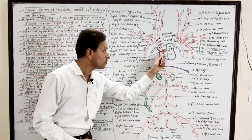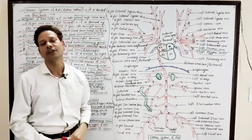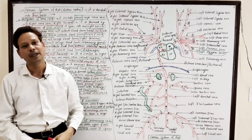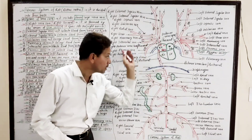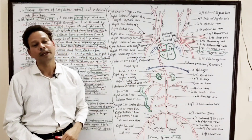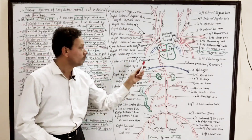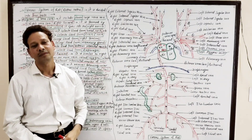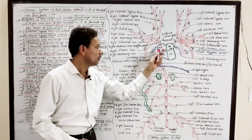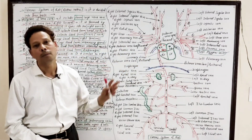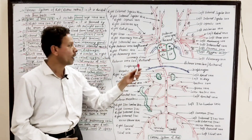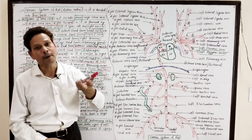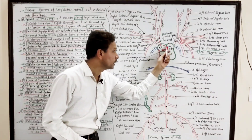The coronary sinus opens into the right atrium. The last system is the pulmonary system, which is exceptional. Because in the venous system all veins bring deoxygenated blood, but in the pulmonary system it is the oxygenated blood that is carried. The right and left pulmonary veins bring oxygenated blood from both lungs and unite to produce a common pulmonary vein, which opens into the left atrium.